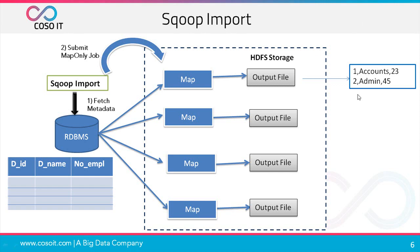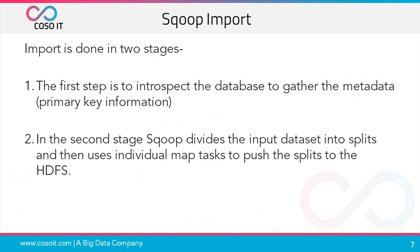So this is how the output file on HDFS looks like. We can summarize that import is done in two stages: the first step is to introspect the database to gather the metadata, that is the primary key information. In the second stage, Sqoop divides the input dataset into splits and then uses individual map tasks to push the splits to HDFS.